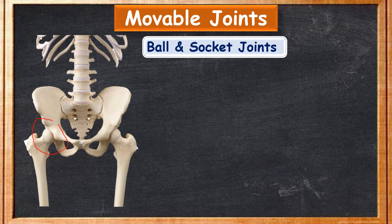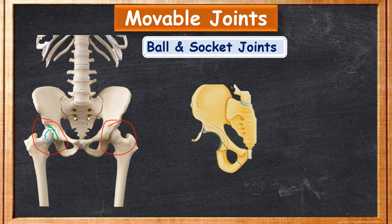This is the pelvic girdle, that means the hip bone. In the hip bone we can see a ball and socket joint. This part is the socket and the other part is the ball. The femur — which is the largest bone in our body, also called the thigh bone — ends in a ball shape. It is fixed in the socket which is in the pelvic girdle, so this joint is called a ball and socket joint.